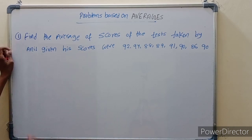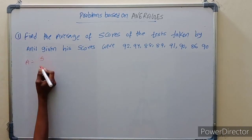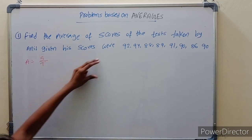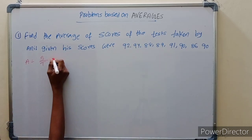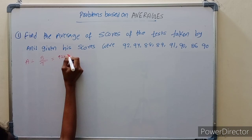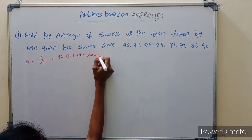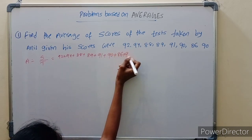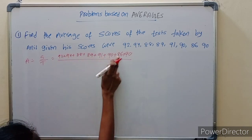The average is equal to sum divided by total. Sum means each number added together: 92 plus 94 plus 88 plus 89 plus 91 plus 90 plus 86 plus 90, divided by the number of entries, which is 8.